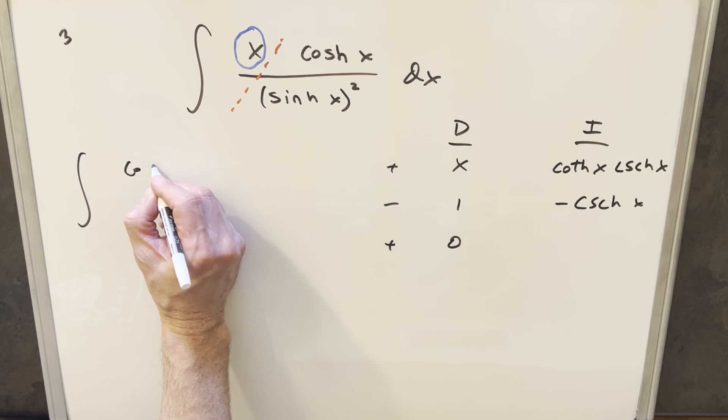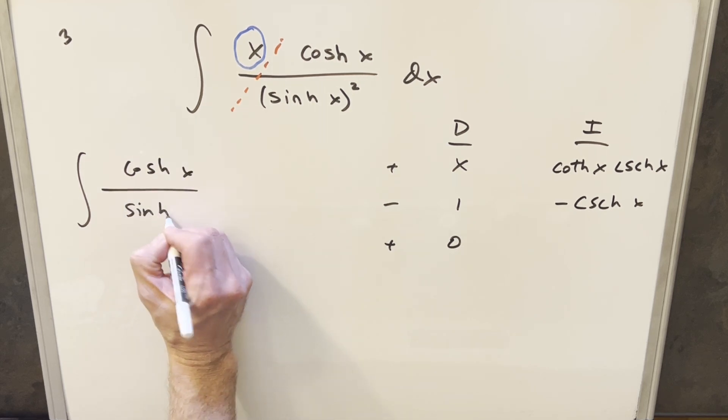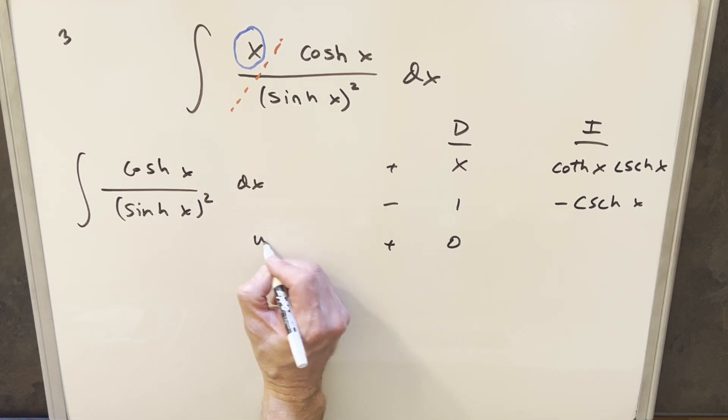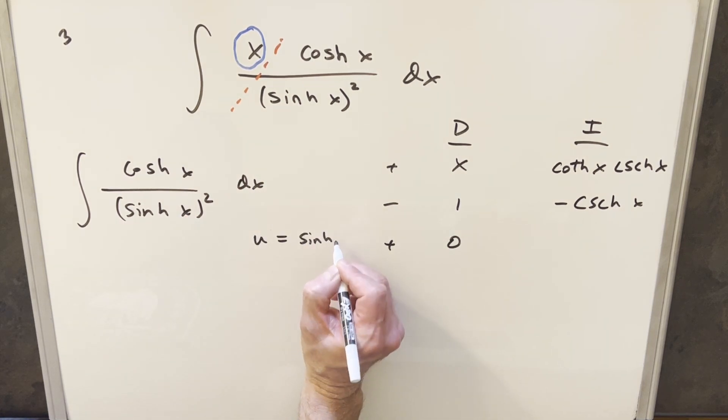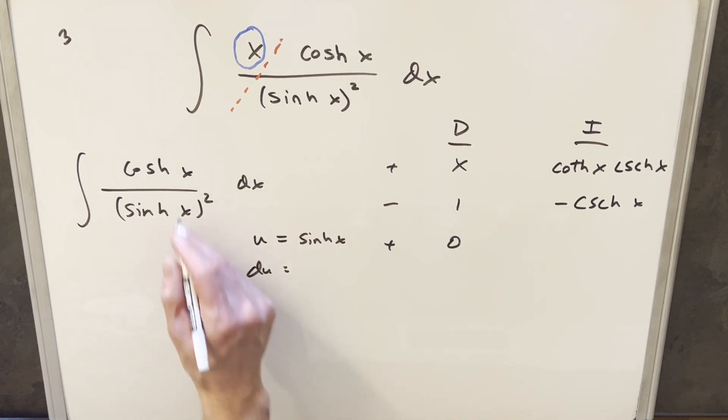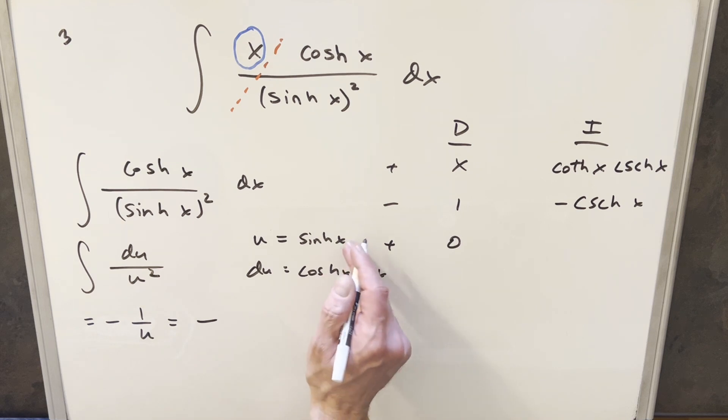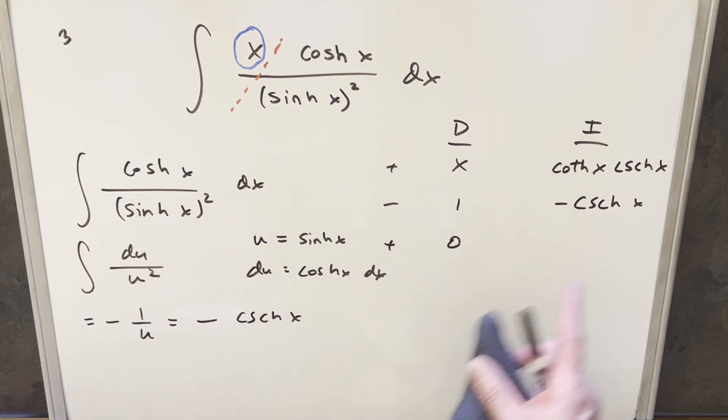If we just look at cosh x over sinh x all squared, we can do a quick u substitution on this. If I make u equal to sinh of x, then du is just everything in the numerator, cosh x dx. So this is going to turn into du over u squared. The integral of that is going to be just minus one over u. Back substituting, it's going to be minus one over sinh x. But one over sinh x is going to be hyperbolic cosecant x. And that's how we get that value.